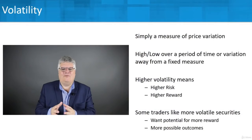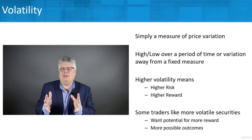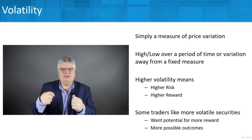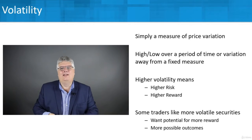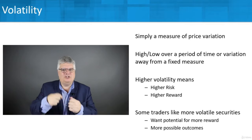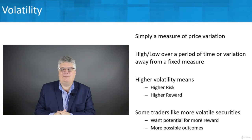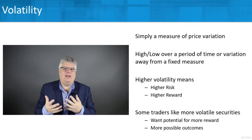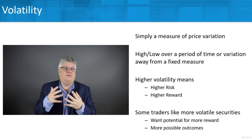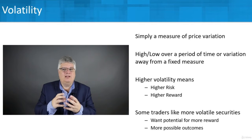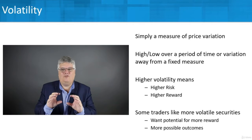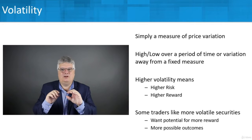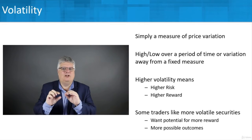So what is volatility, first off? It's simply a measure of price variation. Highs and lows — prices are going up and down all day long. And volatility measures how much that's happening and how fast. So the high and low over a period of time, or the variation from a fixed measure, gives you a feel for volatility. If I have a security that just trades a little bit above and a little below that fixed measure, that's less volatile — lower volatility.